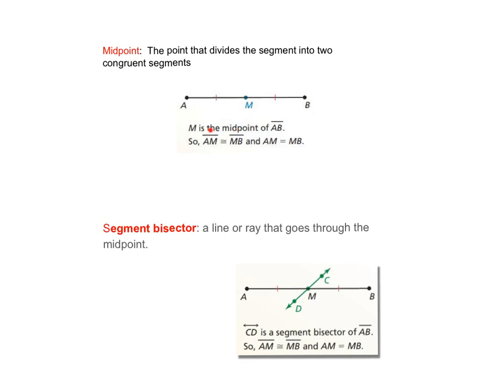In this picture segment AM is congruent to segment MB, which also means AM is equal to MB. The length of this part is equal to this part.